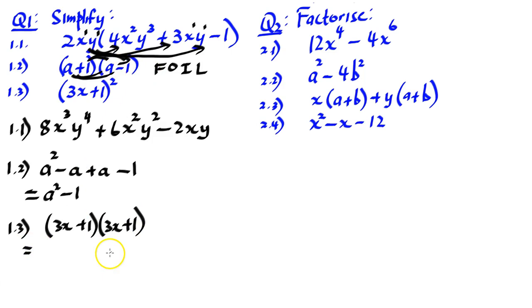We just repeat what we've done in the previous example, using the FOIL method. 3x times 3x is 9x squared. 3x times plus 1 is plus 3x. Plus 1 times 3x is plus 3x. And plus 1 times plus 1 is plus 1. What's our like terms? Plus 3x and plus 3x is plus 6x. Then we bring down the terms 9x squared and plus 1.